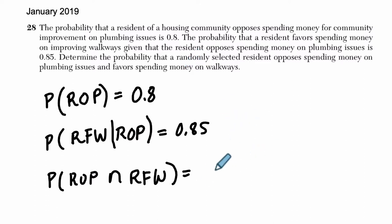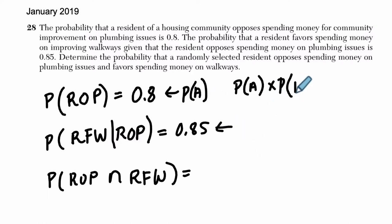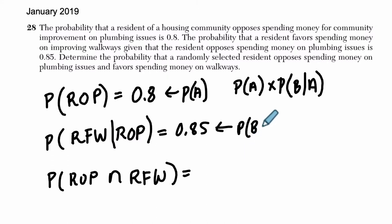What you might notice is that there's a nice definition we can use. In probability, the probability of A happening — some event — times the probability of B, given that A has happened. And that's what we have here. The probability that they favor a walkway given that they oppose plumbing. B given A must equal the probability of A and B.